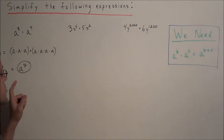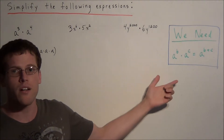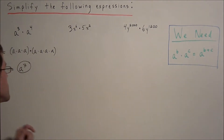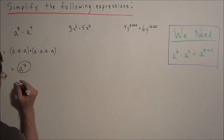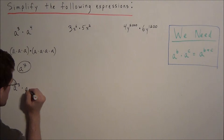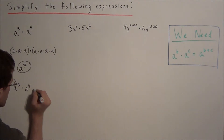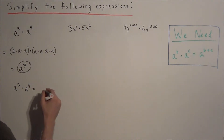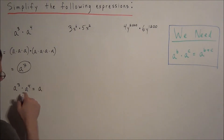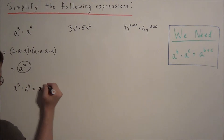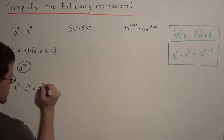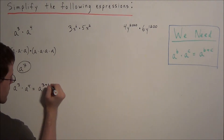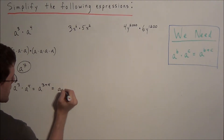A simpler way to do this is to use the product of powers property. For a to the third times a to the fourth, all we need to do is compute a to the three plus four, which gives us a to the seventh power.